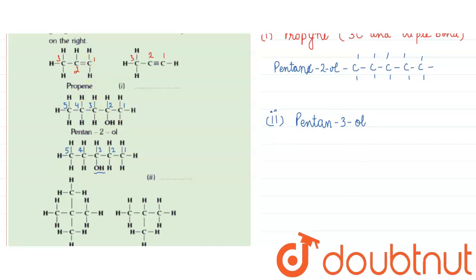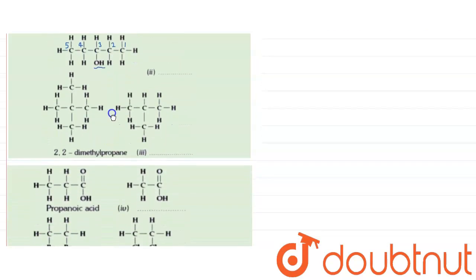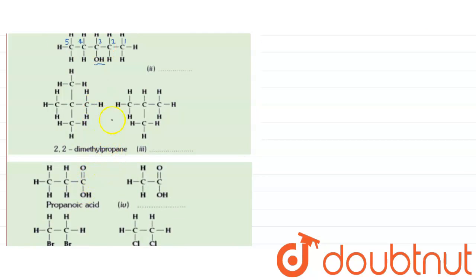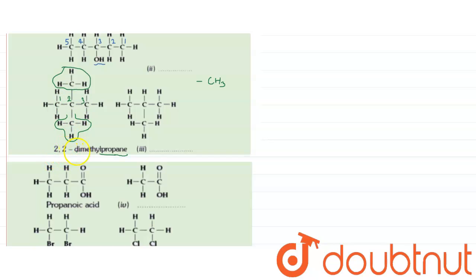The next compound is 2,2-dimethylpropane. Numbering gives one, two, three — three carbons, so 'prop' is used. All joined by single bond, hence 'propane'. At the second position, there are two methyl groups (CH₃). The prefix 'di' indicates two substitutions at position two, giving 2,2-dimethylpropane.